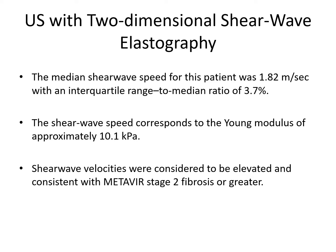Ultrasound with two-dimensional shear wave elastography was done, and the median shear wave speed was 1.82 meters per second, with an interquartile range to median ratio of 3.7%. The shear wave speed corresponds to a Young's modulus of approximately 10.1 kilopascals. Shear wave velocities were considered elevated and consistent with METAVIR stage 2 fibrosis or greater. We will look into the METAVIR scoring table later on.